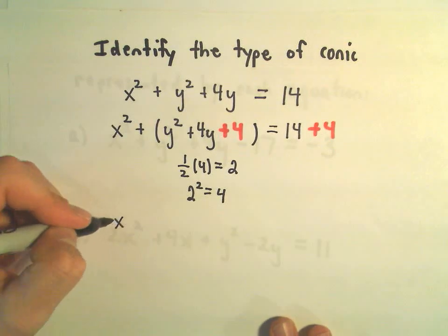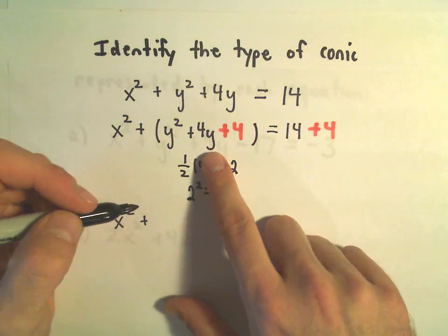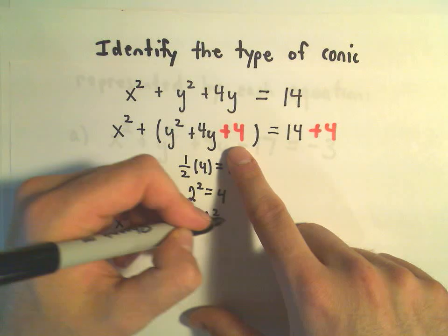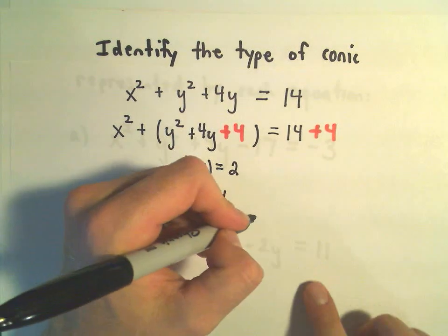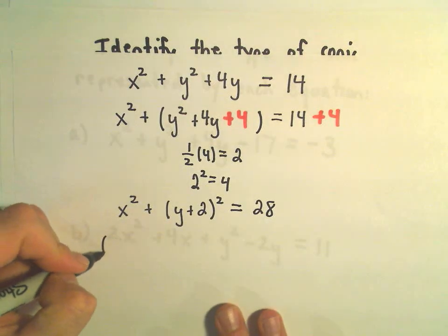And really this would be x squared plus, we could write this y squared plus 4y plus 4. We could write that as y plus 2 quantity squared equals 28. And this is now going to be simply the equation of a circle.